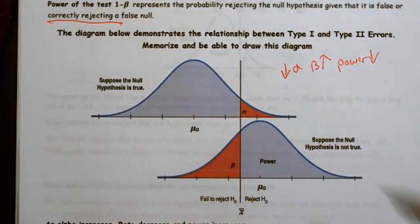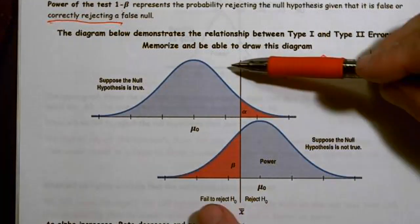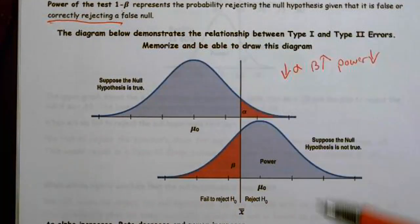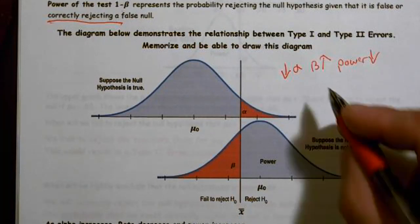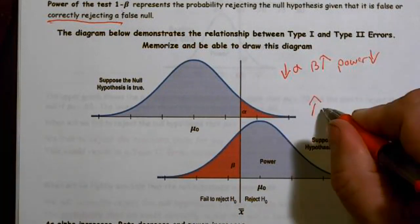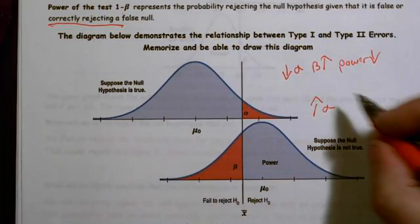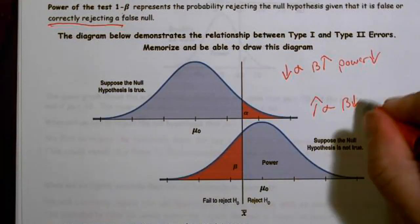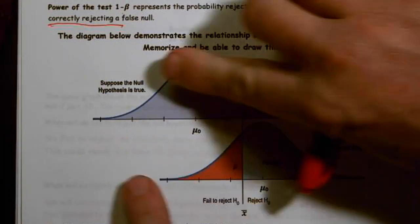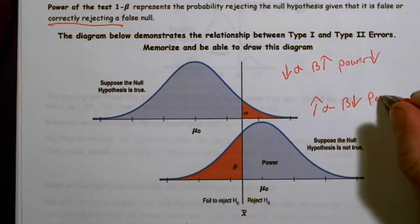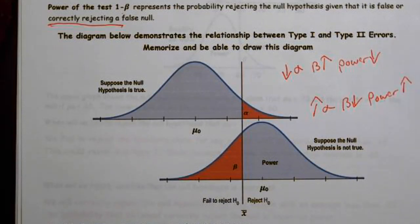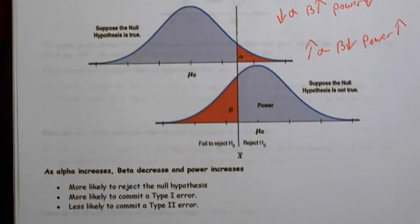On the other hand, if I push in the other direction, alpha is going up. And if alpha is going up, beta is going down, and power is also going up. You need to make sure that you have those relationship directions understood. So alpha and beta move in opposite directions and power moves with alpha, in the same direction as alpha.